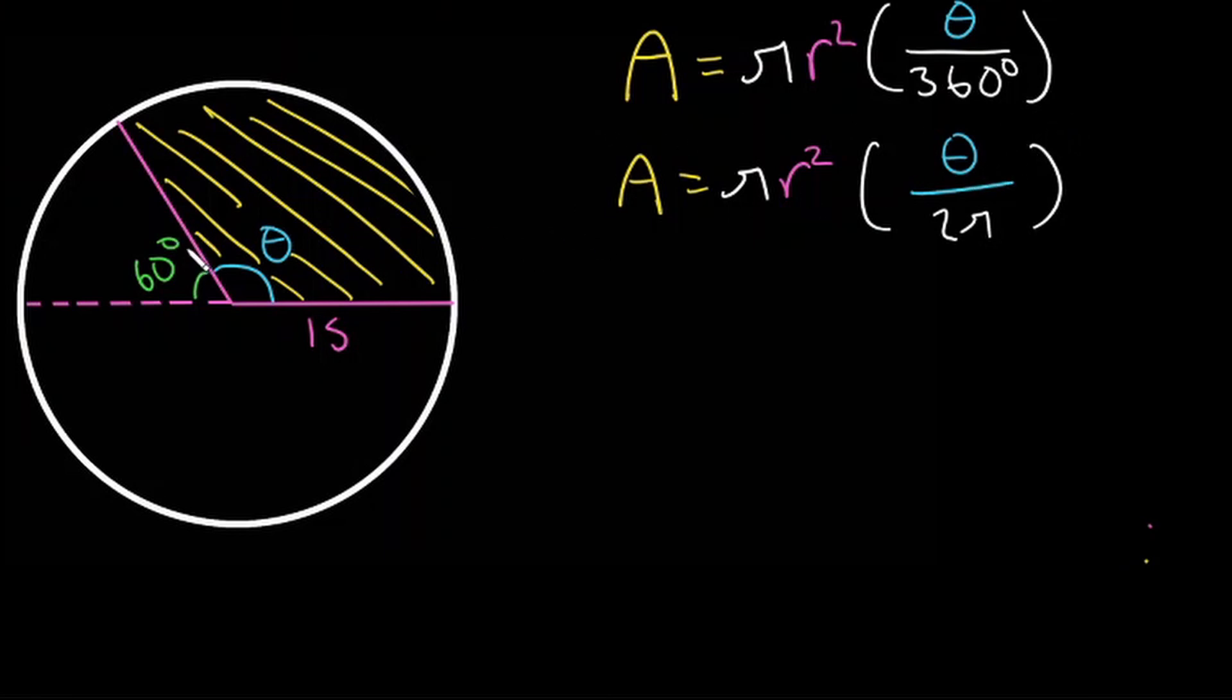The second thing we can see is that this angle here is in degrees so we know we are going to need this first equation here. Now we need to solve for our angle theta because that is the only missing piece of information to plug our values into the equation. So let's solve for theta.